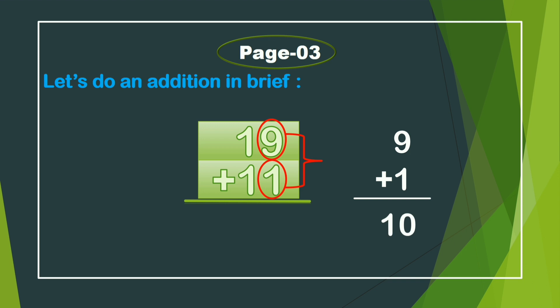9 and 1 will be 10. In this 10, we write only 0 below our right side, and the other 1 will be added with our left-side number. So 1 and 1 is 2, and 2 and 1 is 3. Our answer is 30. Hopefully everybody understands this addition, so let's do more additions on this page.